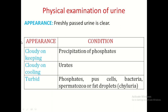The appearance of urine is normally clear. Cloudiness on keeping may be due to precipitation of phosphates. Cloudiness on cooling is due to precipitation of urate crystals. Urine may also be turbid, with various causes including presence of phosphates, pus cells, bacteria, spermatozoa, or epithelial cells.